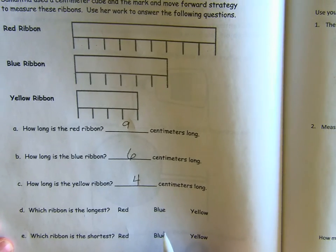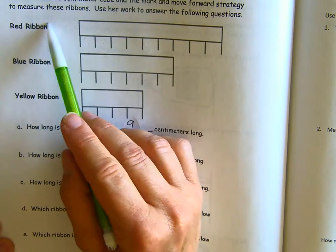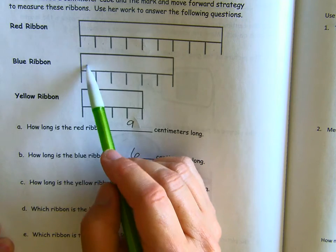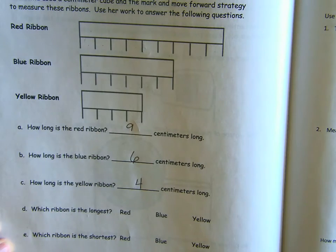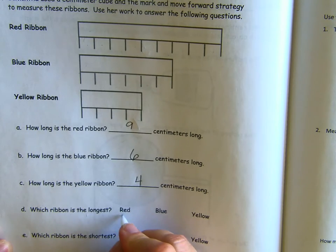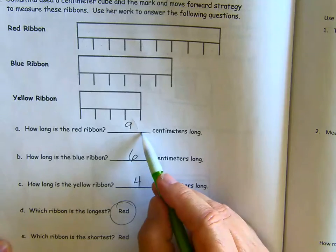Which ribbon is the longest? So, red, blue, yellow. Which one is the longest? That's going to be the red one. Red is nine centimeters.